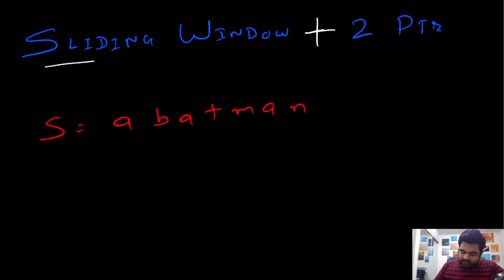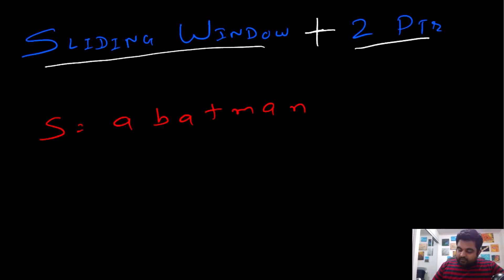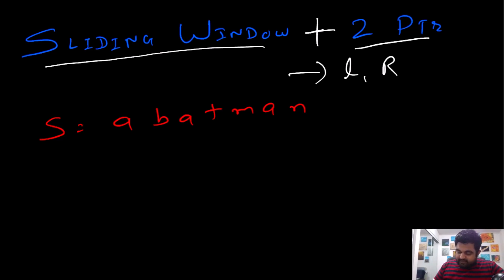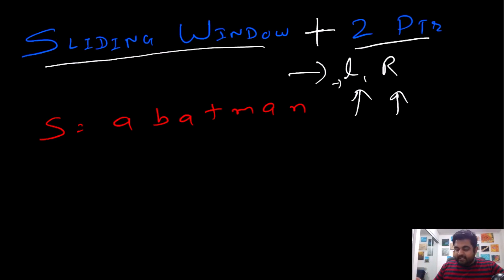To optimally solve this problem, we are going to use an important concept called the sliding window, combined with two pointers called left and right. The key property we maintain is that between the left and right pointers, all elements must be unique. If at any moment we encounter a duplicate entry, we update the left pointer until the duplicate is eliminated, then continue progressing with the right pointer.